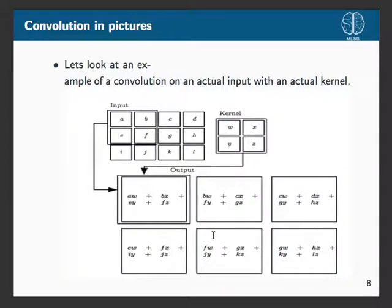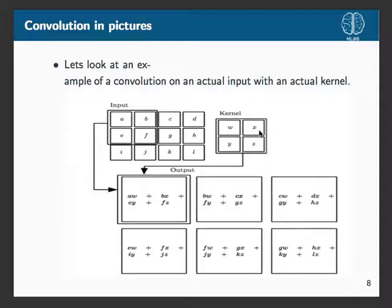To show what a convolution actually looks like: we have an input image and a kernel. The way we calculate the convolution is by sliding this kernel over the image. Looking at an example, we take the kernel and apply it here — computing a times w, b times x, e times y, and f times z. Then we slide the kernel again and take the next portion.